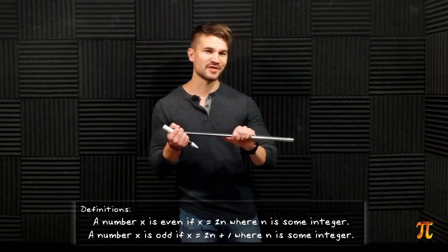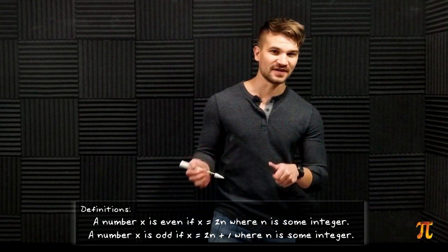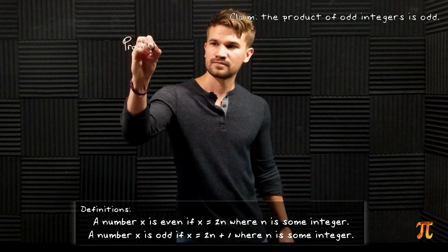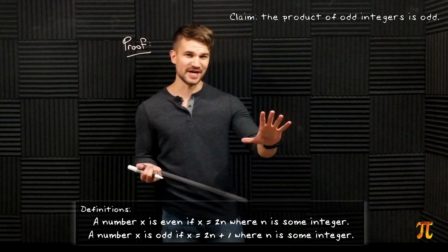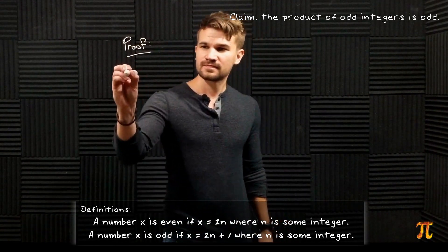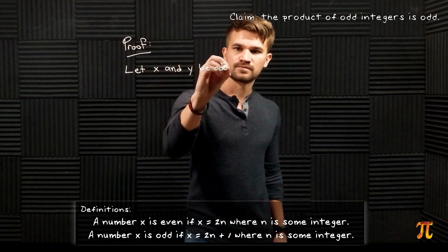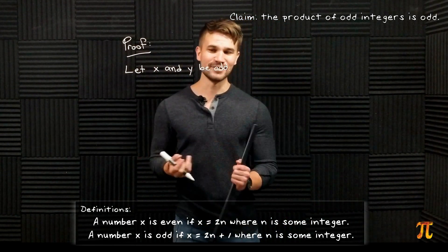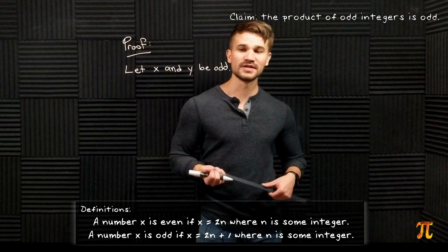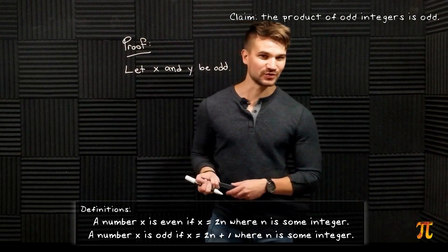Okay, so now let's try showing that the product of two odd numbers is odd. So just like before we're going to let x and y be odd numbers, stay in general about it. Since x and y are odd, by definition there are integers n and m such that x is equal to 2n + 1 and y is equal to 2m + 1.